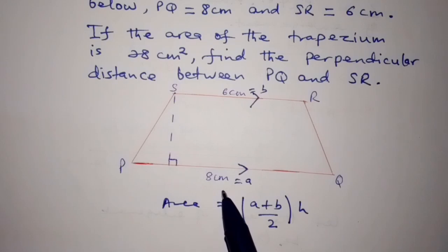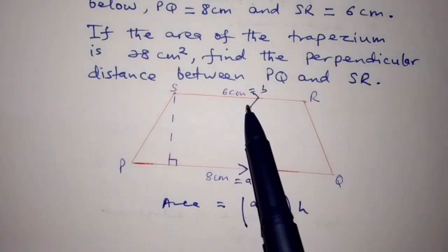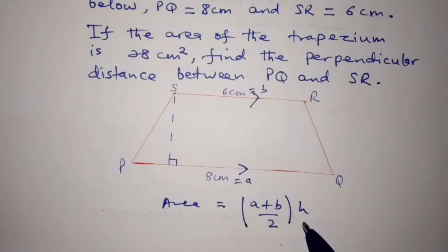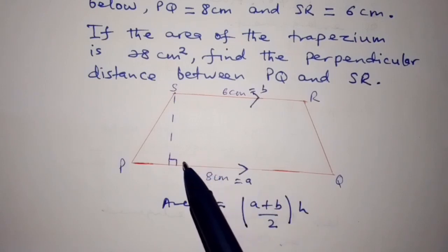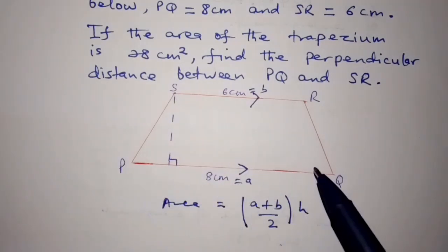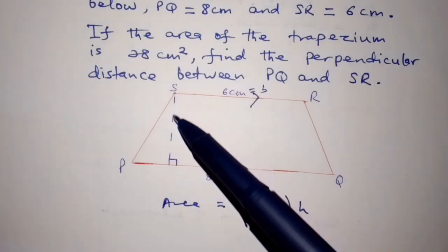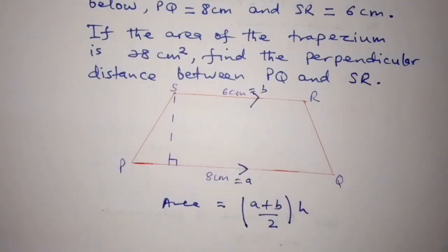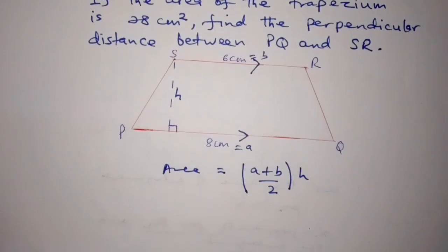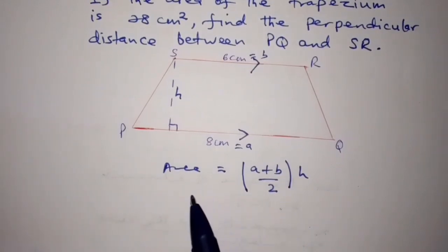So 8 cm is equal to A, and 6 cm is equal to B. H is the perpendicular distance between them. The perpendicular distance is between PQ and SR — we can draw it like this. This angle is 90 degrees, so this is H. Now we can solve this problem using the formula.